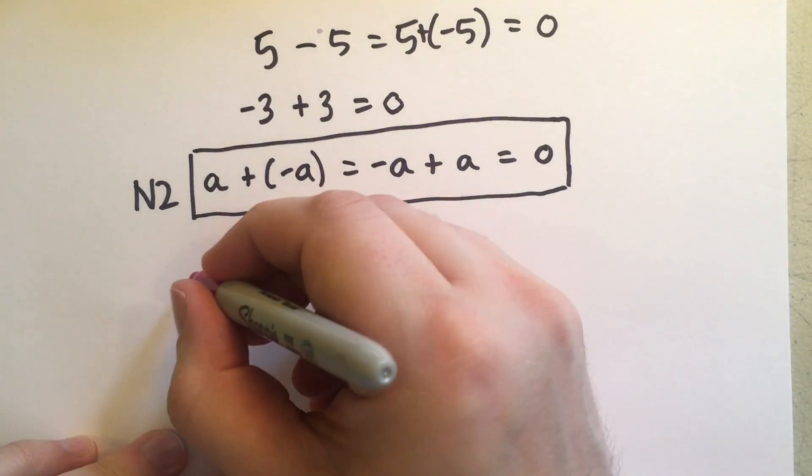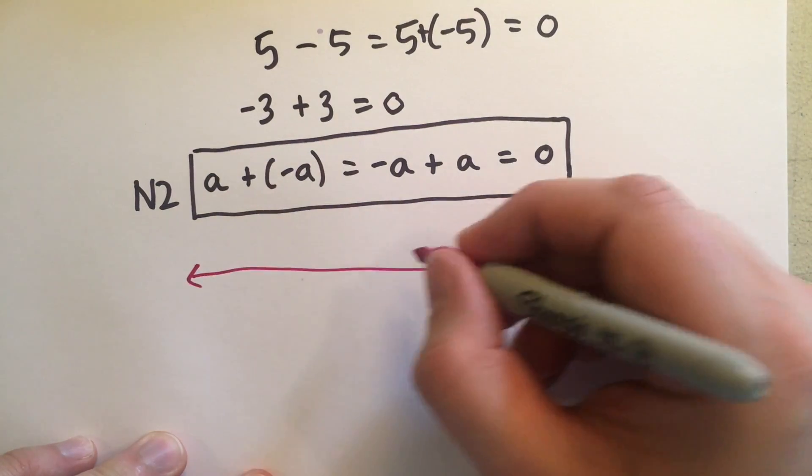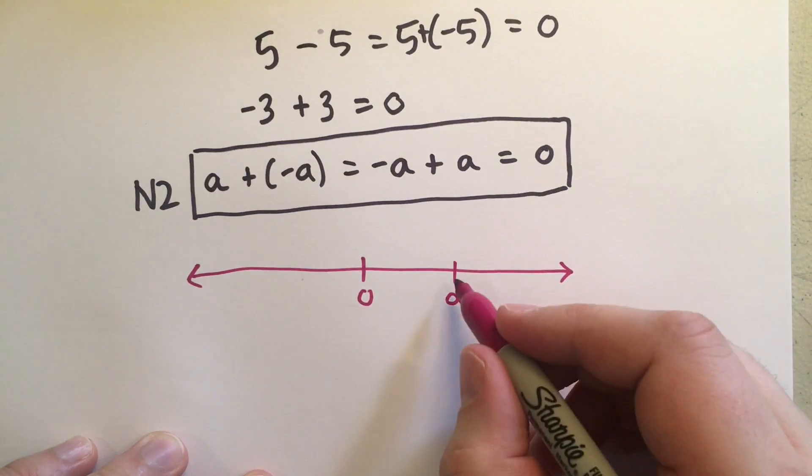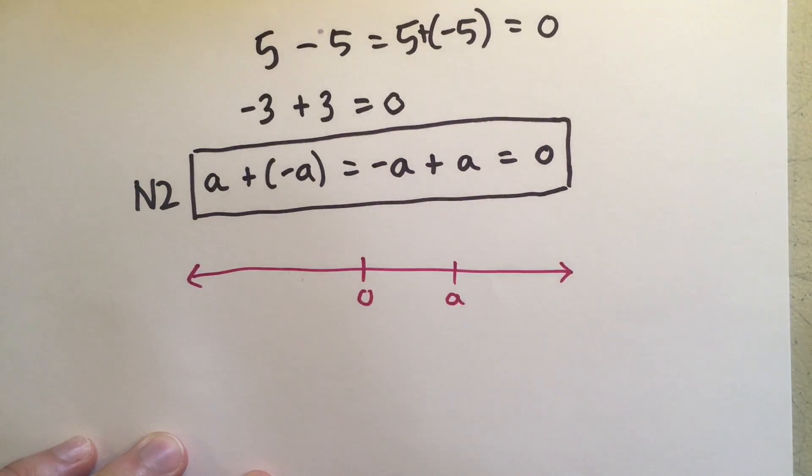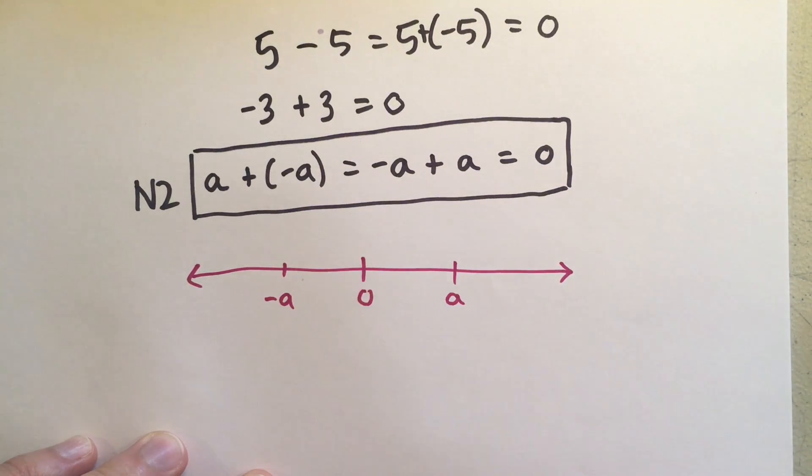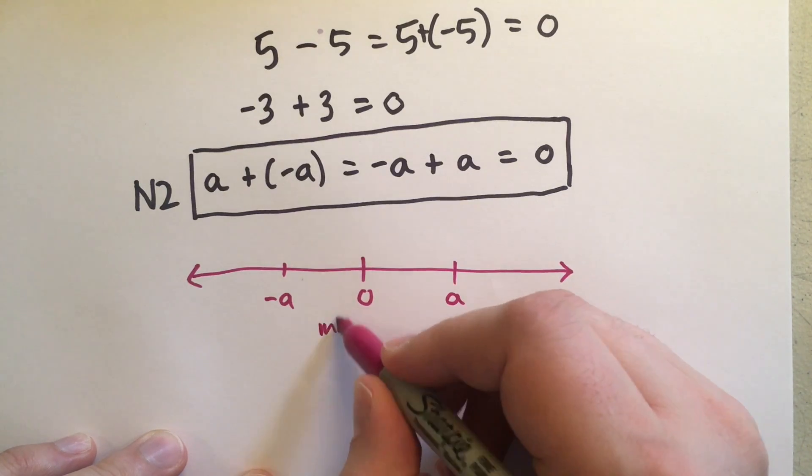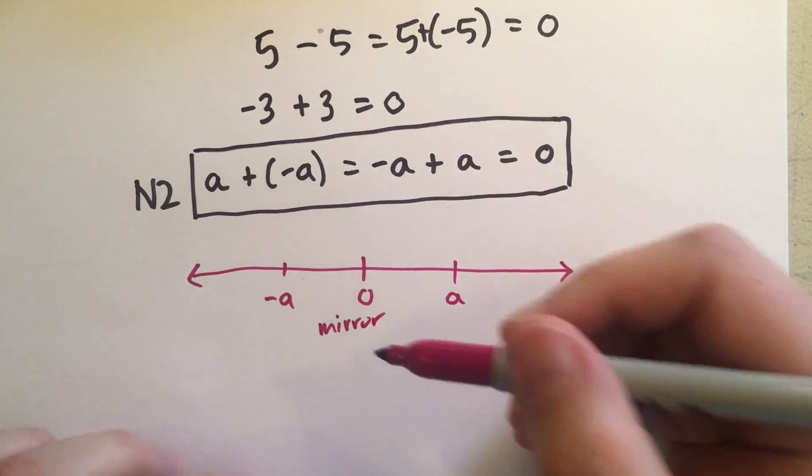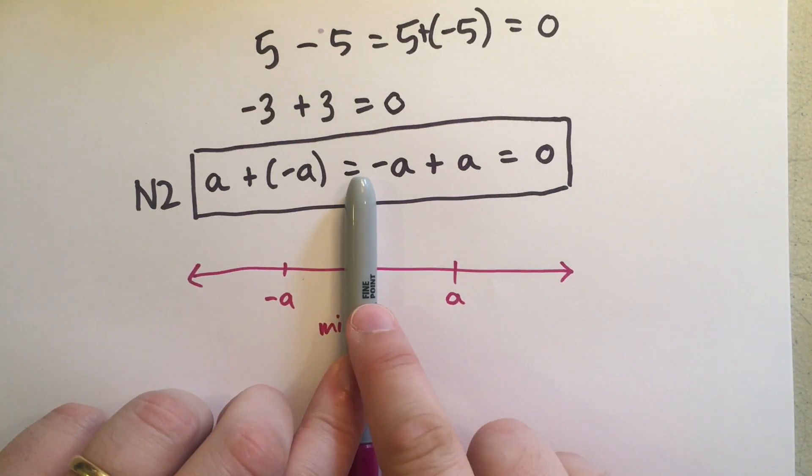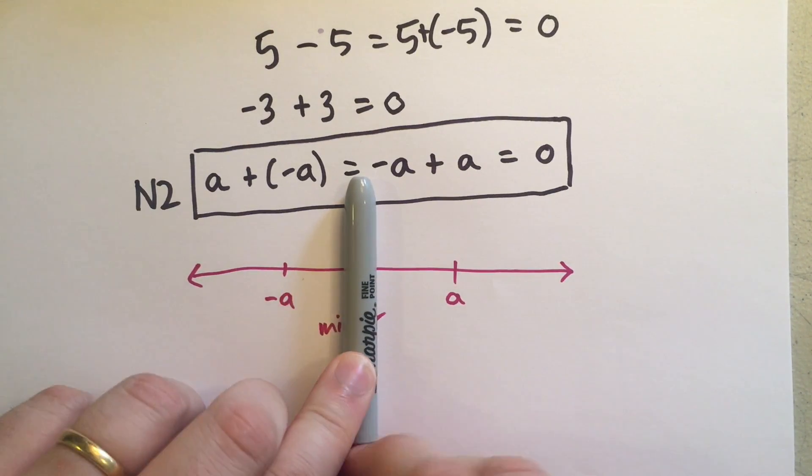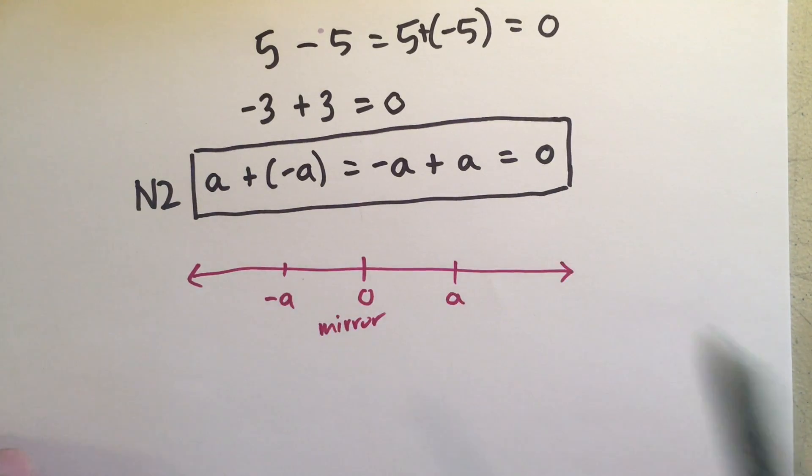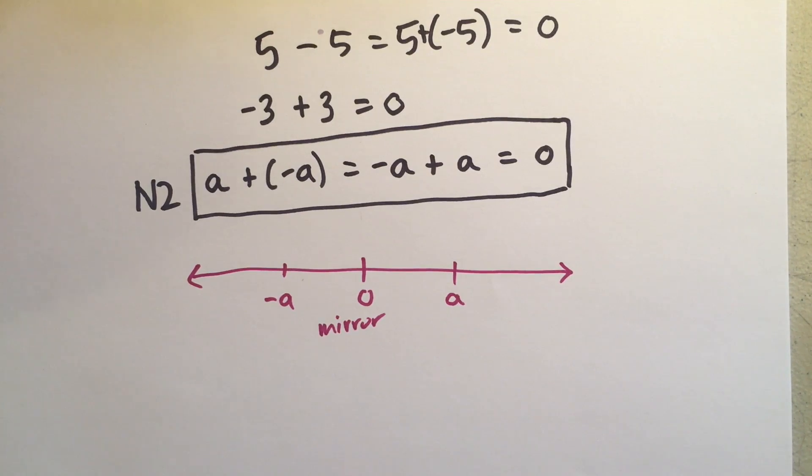On the number line, what does this look like? Pull out my little pink. We have the number line here. It goes off to the right, it goes off to the left. Let's put 0 in the middle this time. If we start at A, and we go back negative A steps, we get back to 0. And if we start at negative A, and we go forward A steps, we get back to 0. This is sort of a mirror, with the origin being the plane of the mirror. So, the reflection, when A looks in the mirror, it sees negative A. And when negative A looks in the mirror, it sees A. So, the positive and the negative realms are sort of mirror images of each other. One goes to the right, while one goes to the left.